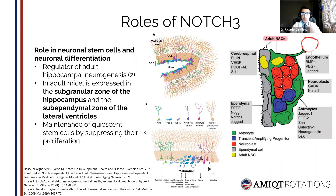NOTCH3 continues to function in various capacities in the adult organism. Its role in neuronal stem cells and neuronal differentiation implies maintenance of quiescent stem cells by suppressing their proliferation and regulating adult hippocampal neurogenesis. In adult mice, NOTCH3 is expressed on neural stem and progenitor cells in the subgranular zone of the hippocampus and the subependymal zone of the lateral ventricles.